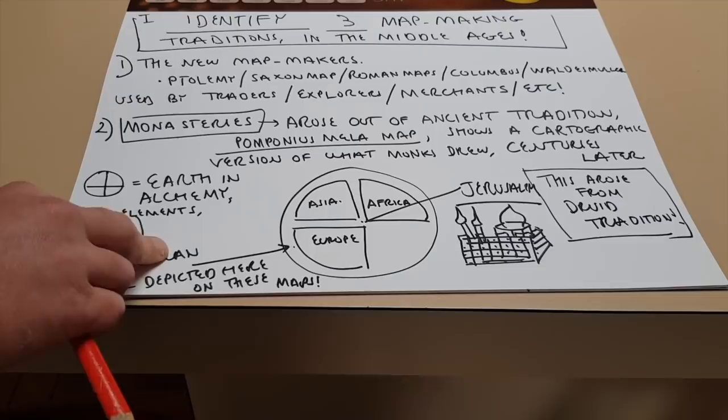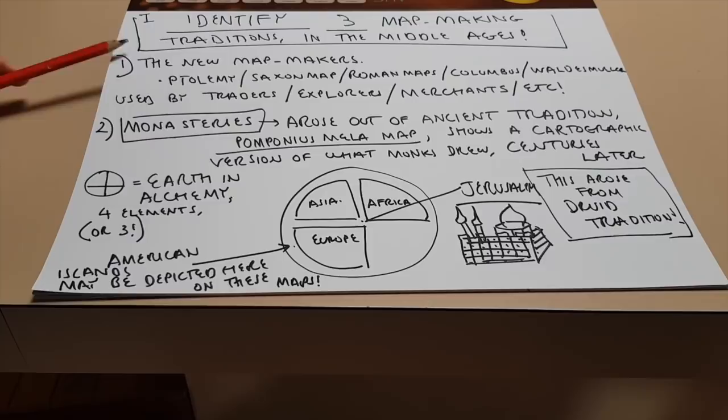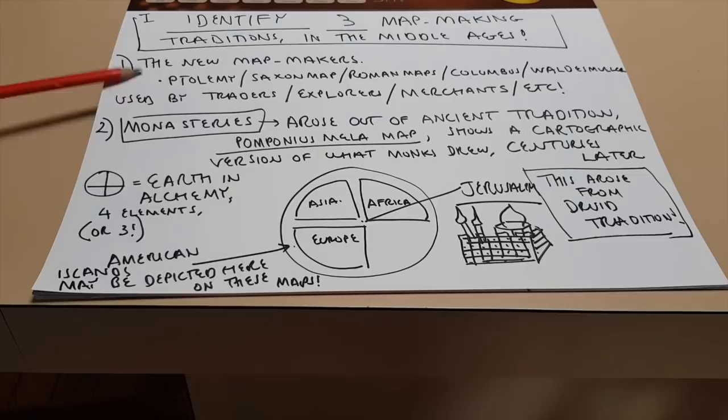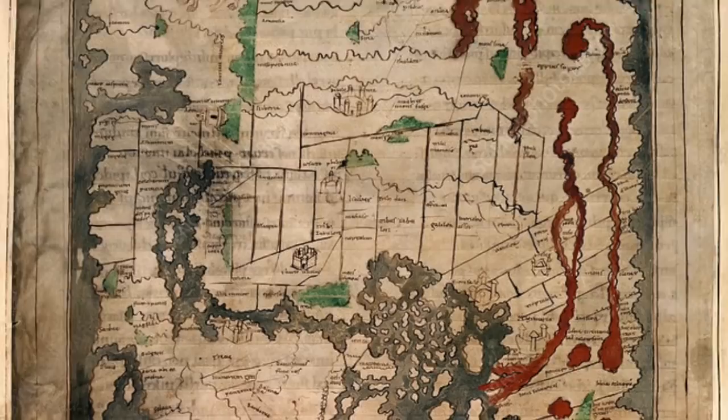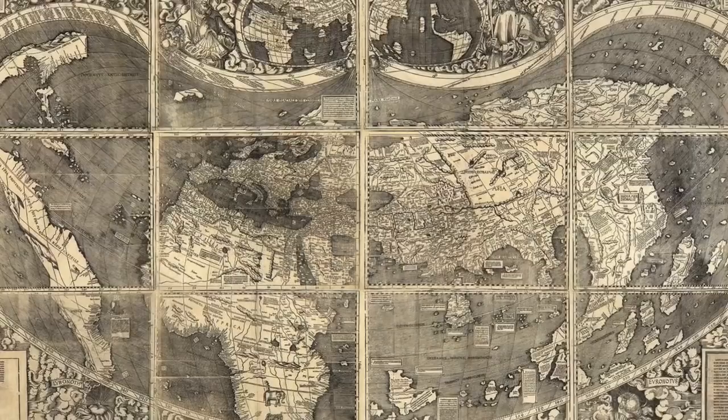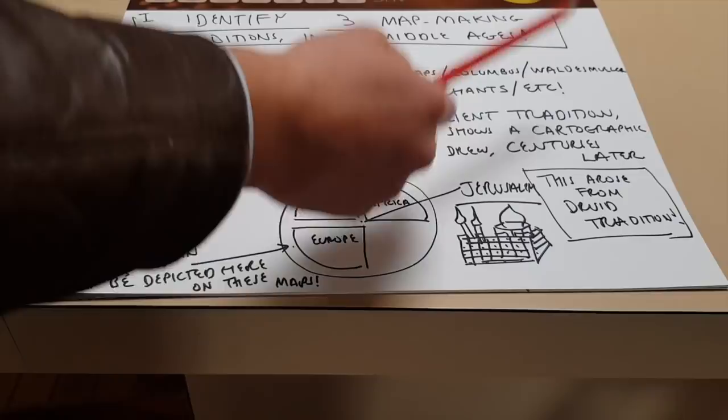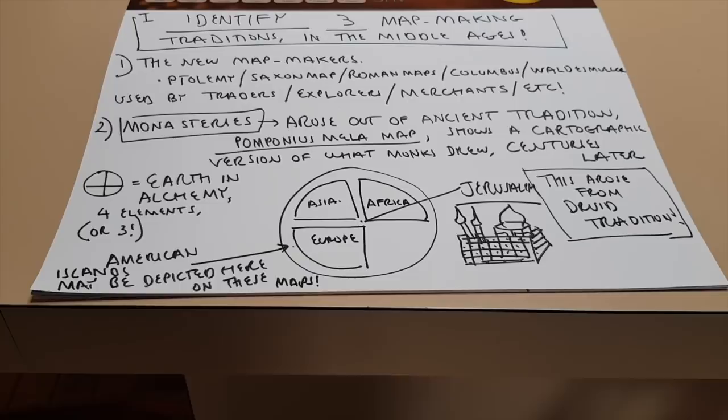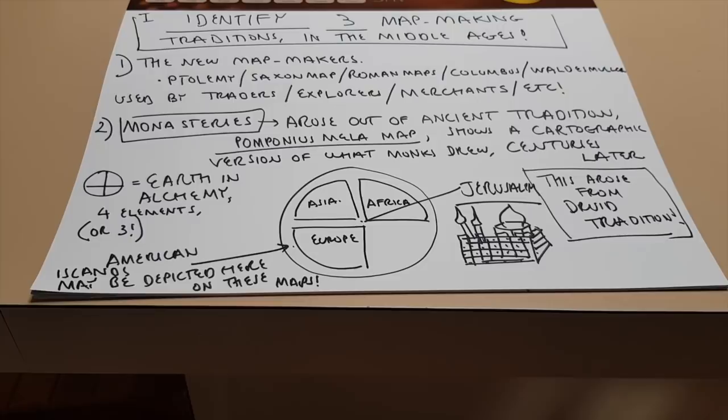Fascinating. So I identify three mapmaking traditions in the middle ages. So firstly, let's look at the new map makers. These are the people who were trying their best to find what the earth is really like. So Ptolemy, the famous Saxon map, the Roman maps, maps used by Columbus and the Valdez Müller maps and many others used by traders, explorers, merchants, et cetera. And these were very accurate maps. They wanted them to be as good as possible. And they were mainly new maps, brand new maps.